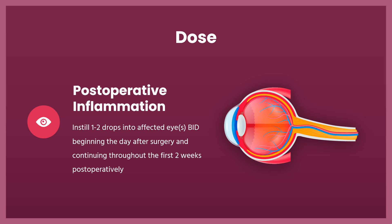Gel or suspension: Apply 1–2 drops into the conjunctival sac of affected eyes QID beginning the day after surgery and continuing throughout the first 2 weeks postoperatively. Ointment: Apply a 0.5-inch ribbon into conjunctival sacs QID beginning the day after surgery and continuing throughout the first 2 weeks postoperatively. LoteMax SM: Apply 1 drop of gel into the conjunctival sac of affected eyes TID beginning the day after surgery and continuing throughout the first 2 weeks postoperatively.